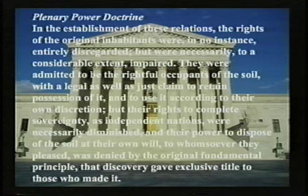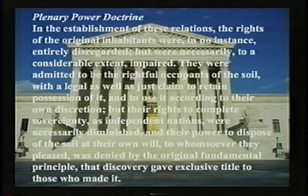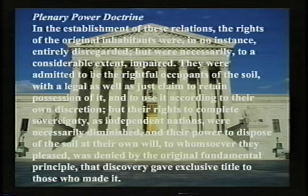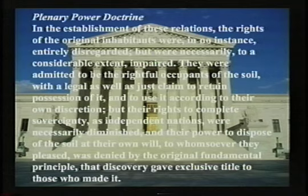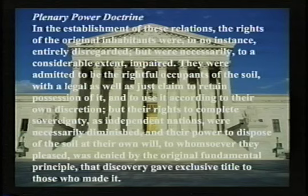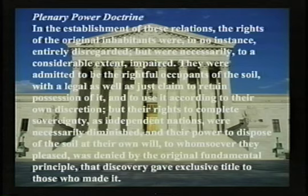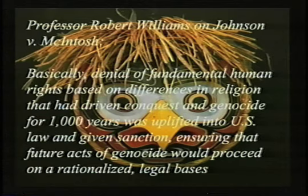Marshall wrote: 'In the establishment of these relations, the rights of the original inhabitants were, in no instance, entirely disregarded, but were necessarily, to a considerable extent, impaired. They were admitted to be the rightful occupants of the soil, with a legal as well as just claim to retain possession of it, and to use it according to their own discretion. But their rights to complete sovereignty, as independent nations, were necessarily diminished, and their power to dispose of the soil at their own will, to whomsoever they pleased, was denied by the original fundamental principle that discovery gave exclusive title to those who made it.' This plenary power doctrine — that the federal government has full power over the Indian nations — is now a legal doctrine firmly embedded in Indian law. It originates on a fairly shaky foundation in Johnson, is nowhere found in the Constitution, and has been criticized by scholars.